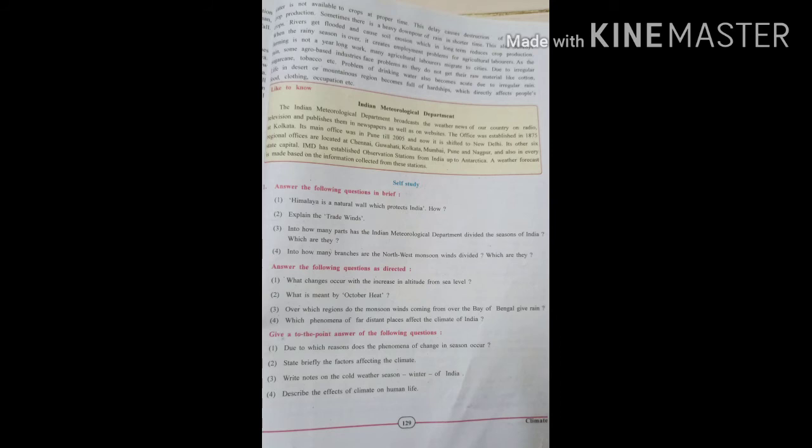Now students, question answers. Himalaya is a natural wall which protects India. How? Page number 124, second paragraph, third last line. Temperature does not fall below freezing point during the winter except the high mountainous regions, because the Central Himalaya obstructs the extremely cold winds coming from central Asia and protects India from severe cold. Explain trade winds. Page number 122, fourth factor atmospheric pressure and winds. How many parts, how many seasons Indian Meteorological Department divided? Four seasons: cold weather season, hot weather season, advancing monsoon, retreating monsoon season.